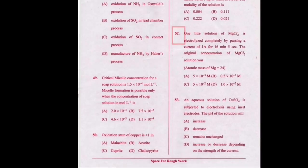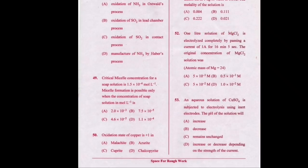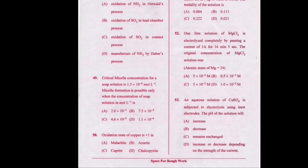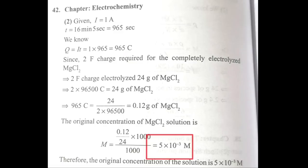In this question, the probability of the correct option being option A and option C — both are having a similar start. To decide the correct answer, we take the help of other options. Option B has the number 5, which supports option A. Therefore for this particular question the correct option will be option A. If you're solving without tricks, imagine how much you have to do — you can verify your answer here.